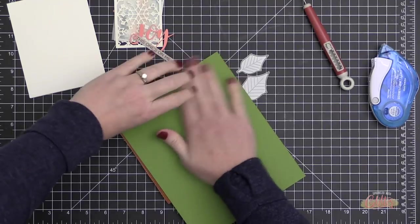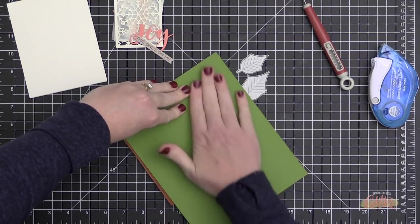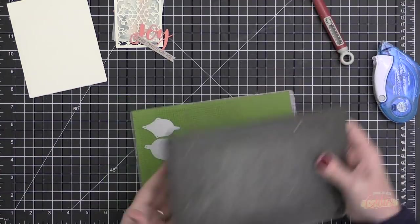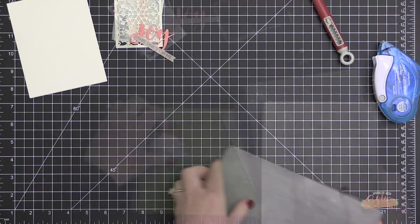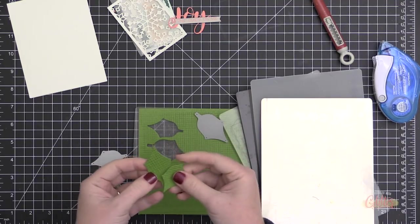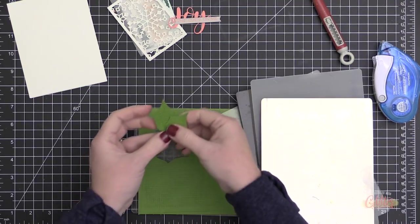So I'm taking some green cardstock and I'm stamping it with a mesh background stamp just to give the cardstock a little texture, because I did use textured cardstock on that Joy die cut and I kind of wanted it to go with that.